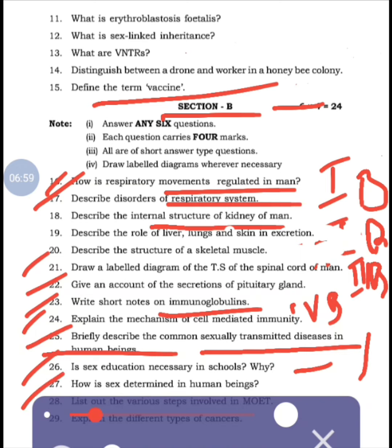Twenty-seventh: How is sex determined in human beings? - genetics chapter. Twenty-eighth: List out the various steps involved in MOET. Twenty-ninth: Explain the different types of cancers. These last two are from the last chapter, applied biology, eighth chapter. This is about Section B.